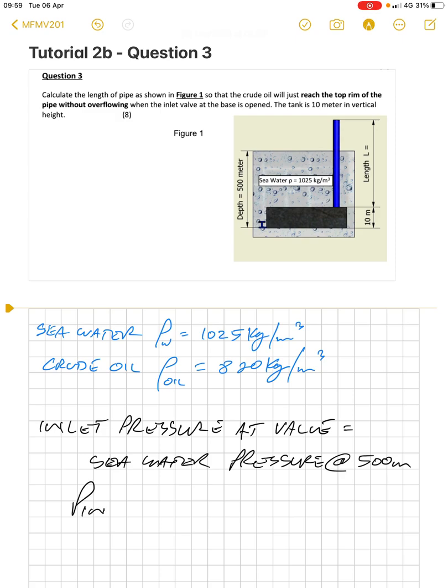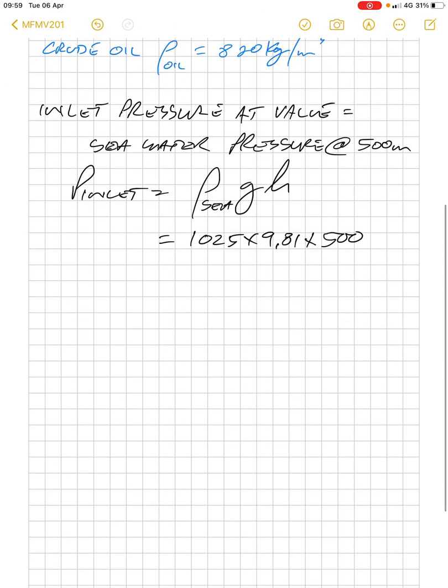So pressure at the inlet is therefore equal to the density of the seawater times g times h. That's 1025 times 9.81 times 500 meters. The inlet pressure at the tank is therefore 5027.625 kilopascals.